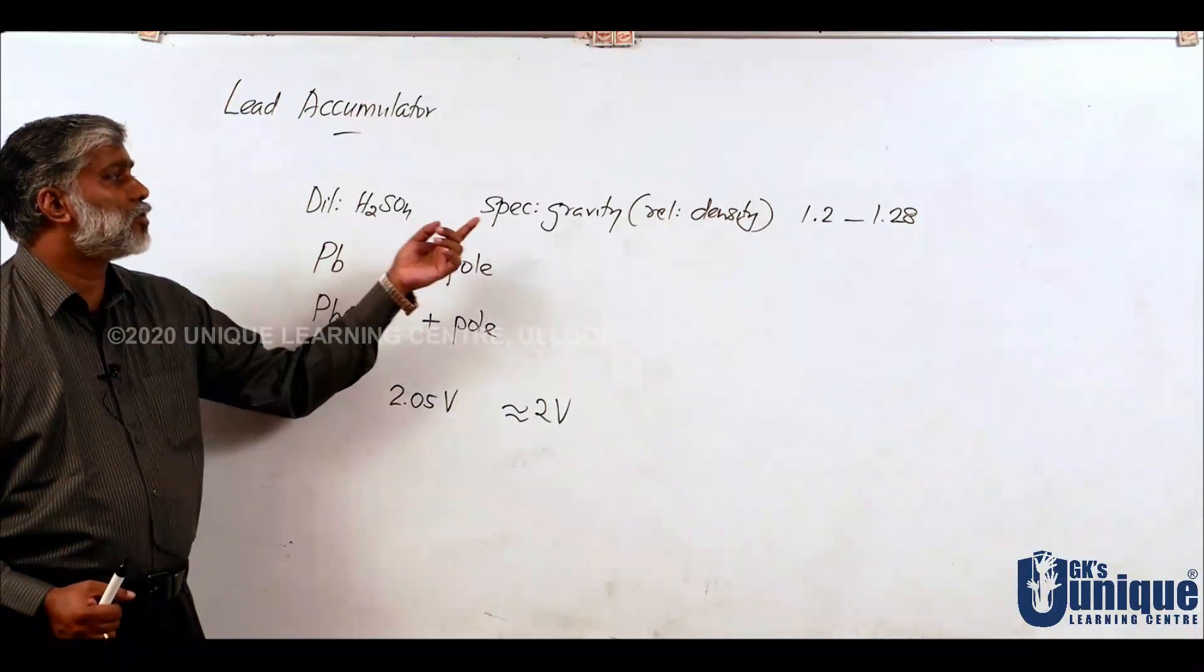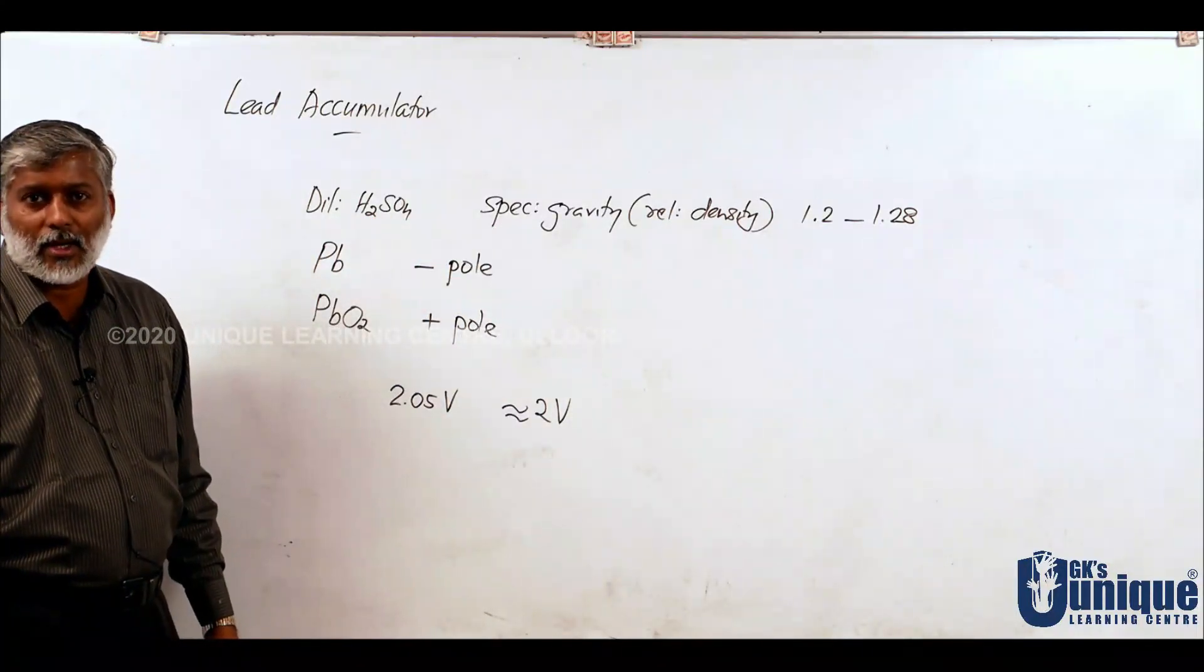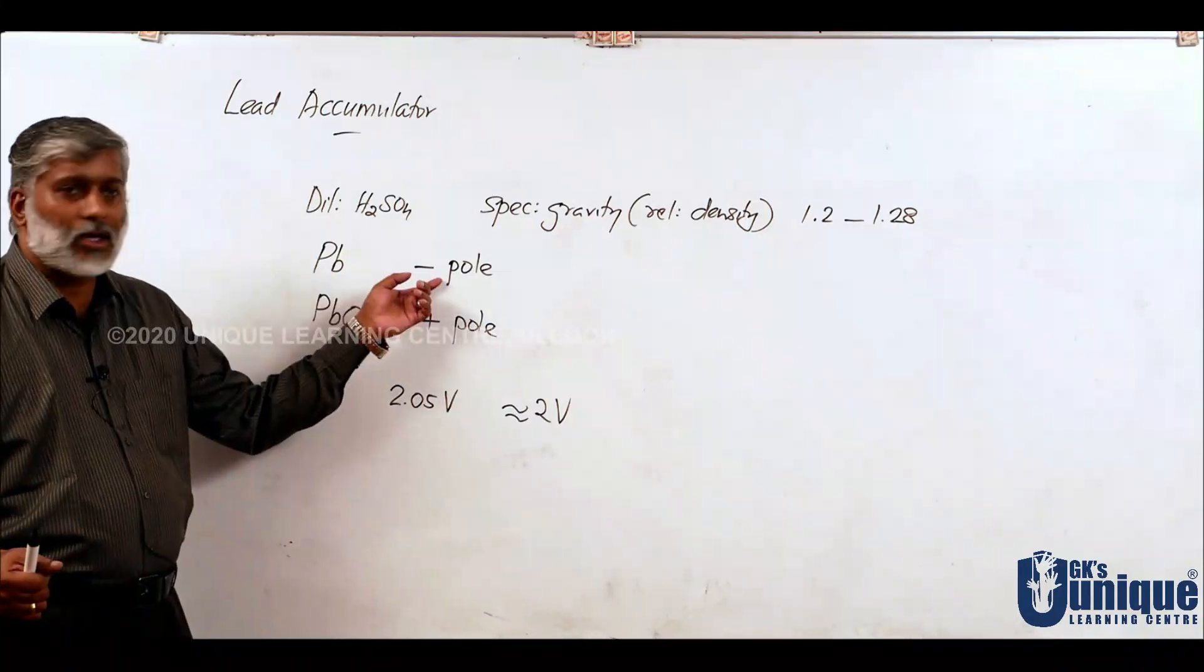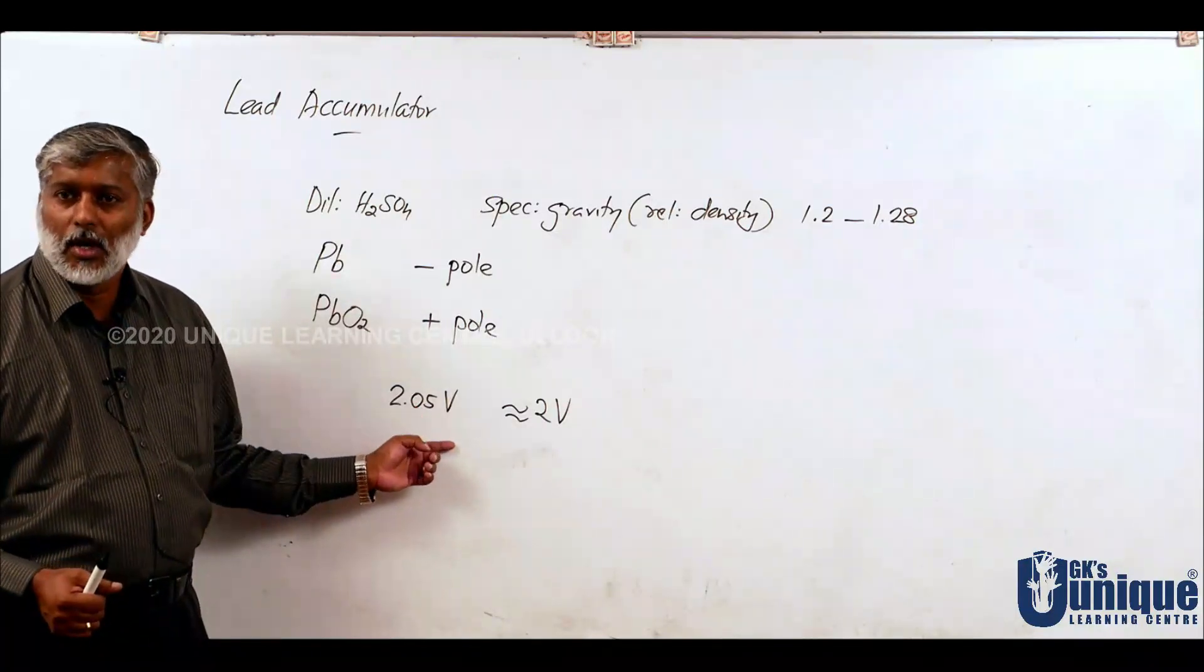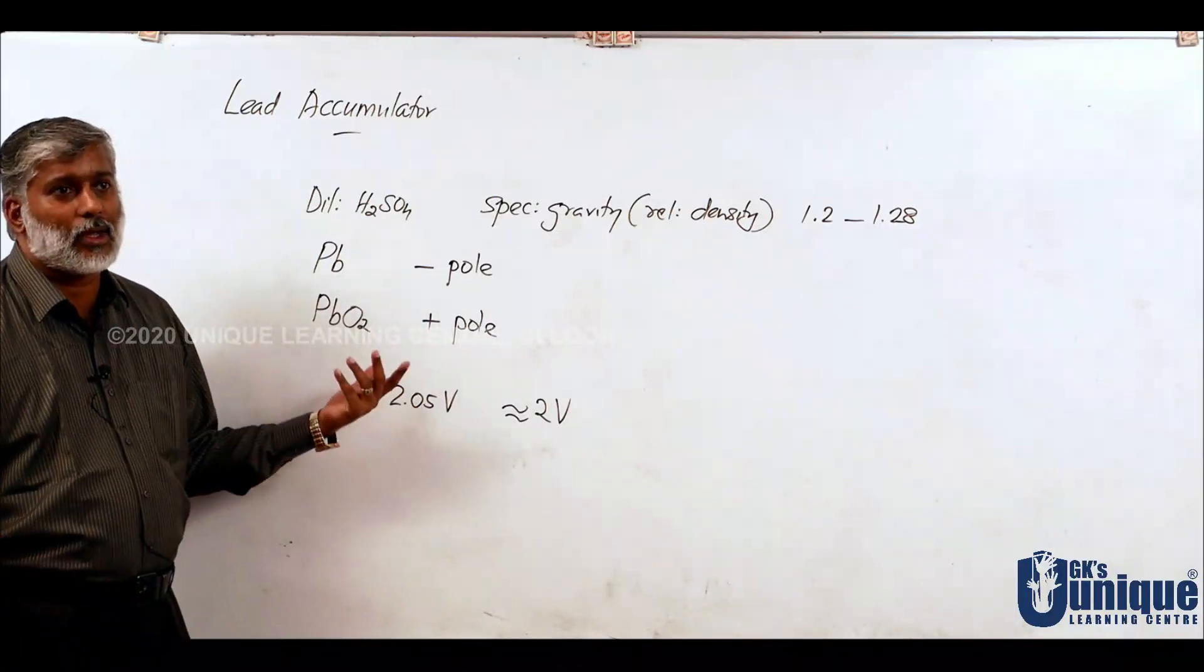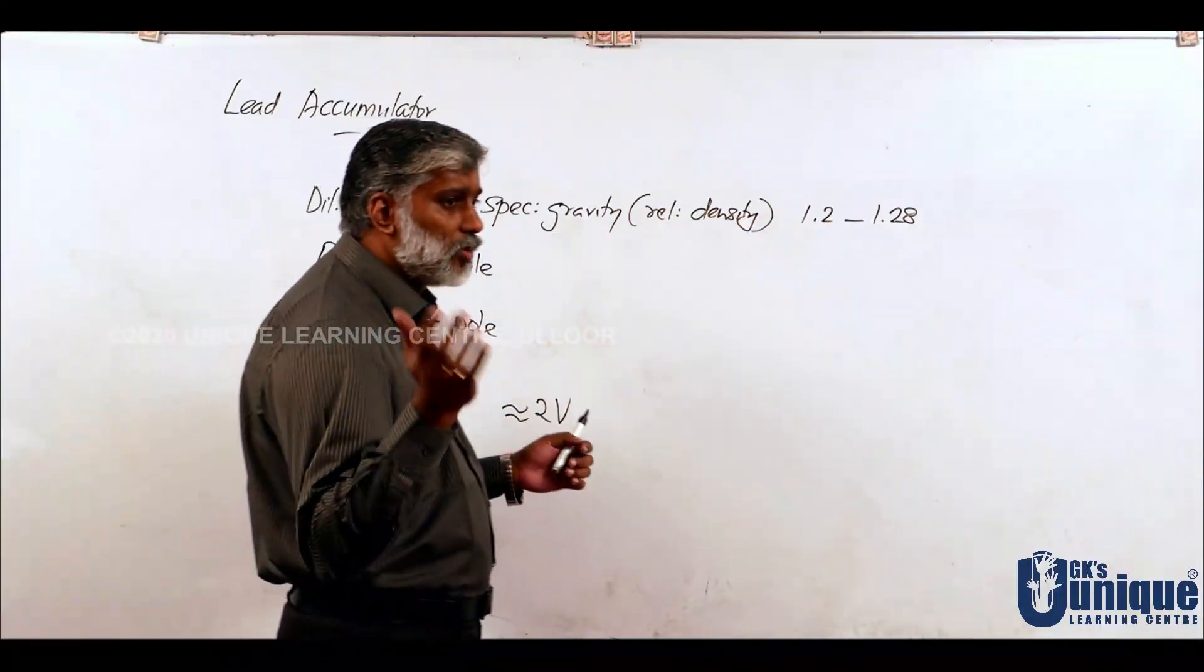Dilute Sulfuric Acid having specific gravity between 1.2 and 1.28 will act as electrolyte. Lead Dioxide is negative pole, Lead Dioxide.